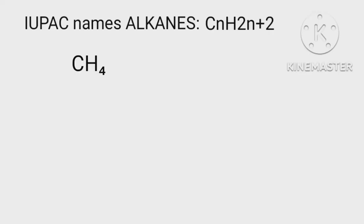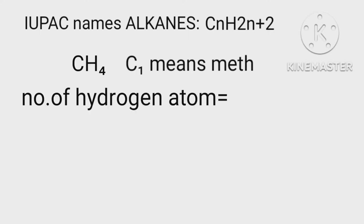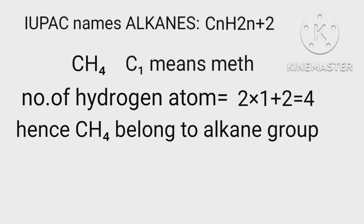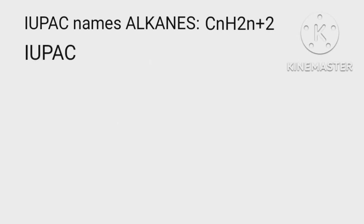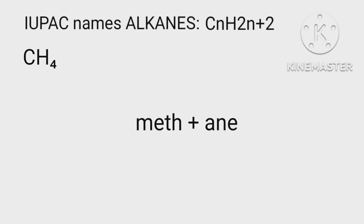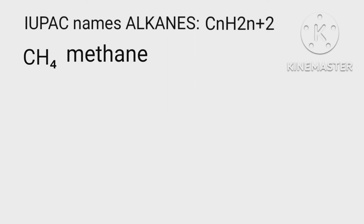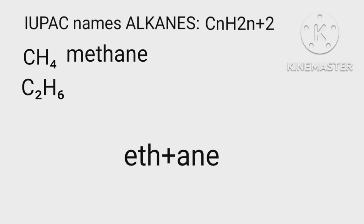CH4: here C1 means 'meth', and the number of hydrogen atoms is 2 more than twice the number of carbon atoms — that is, 2×1+2 = 4. Hence it belongs to the alkane group. When writing the IUPAC name, we add '-ane', so the IUPAC name of CH4 is meth + ane = methane. Similarly, C2H6: eth + ane = ethane.